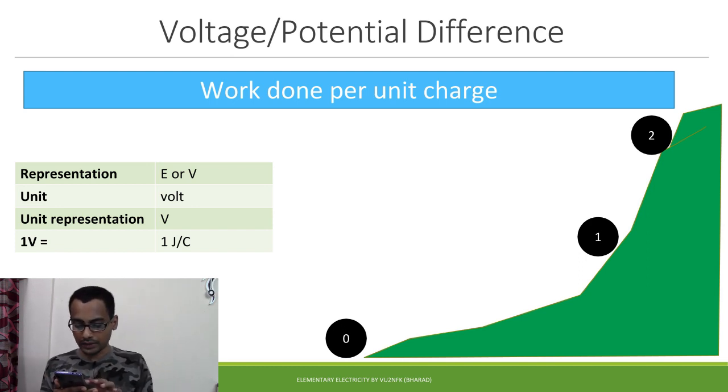So coming to the representation, it is represented by the letter E or V and its unit is volt. And unit's representation is the capital letter V. So 1 volt is equal to 1 joule per coulomb. That is, you say that there is a potential difference between 2 points to be 1 volt when you require 1 joule of energy to move 1 coulomb of charge from 1 point to the next point.